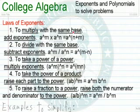In order to multiply with the same base, we add exponents. If we have a raised to the m power times a raised to the n power, then we add m plus n and we get a raised to the m plus n power. To divide with the same base, we subtract exponents, which is the natural opposite thing to do. So a raised to the m power divided by a raised to the n power, we take m minus n, a raised to the m minus n power.